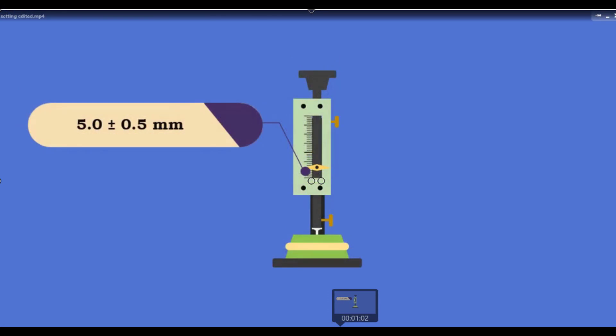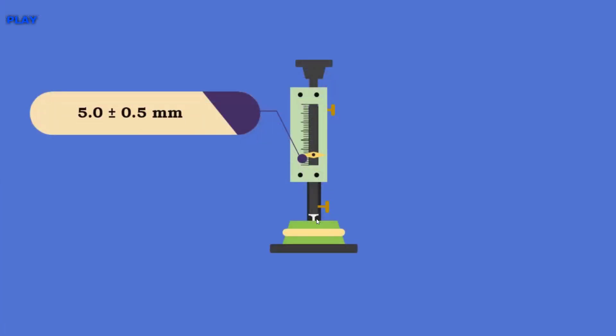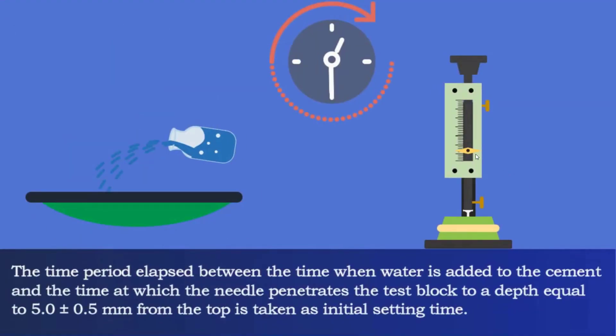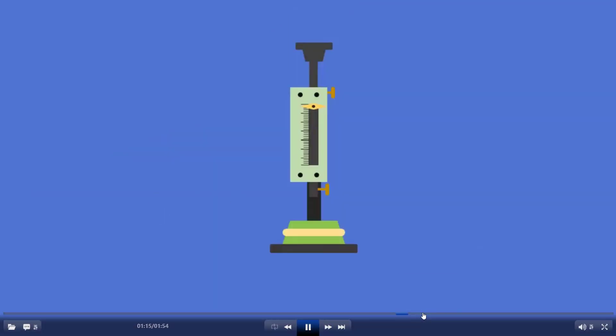One thing to keep in mind: the point at which you have penetrated the needle, you must not penetrate it again at the same location within the recording interval. Secondly, you must have an interval of 2 to 3 minutes between each penetration so that you can capture the setting time accurately. Then you will take readings until the final setting is achieved. For the final setting, you have a needle aligned with the collar, and only the penetration of the needle is allowed.